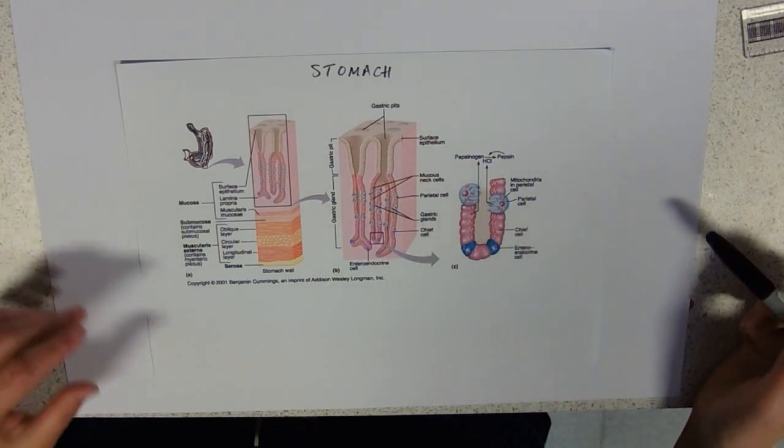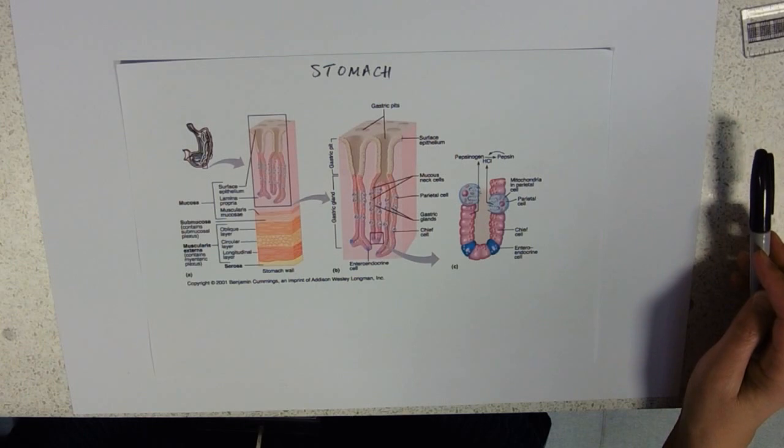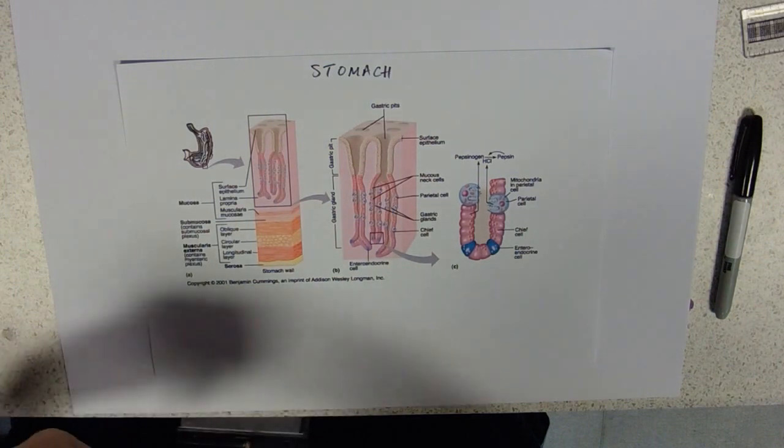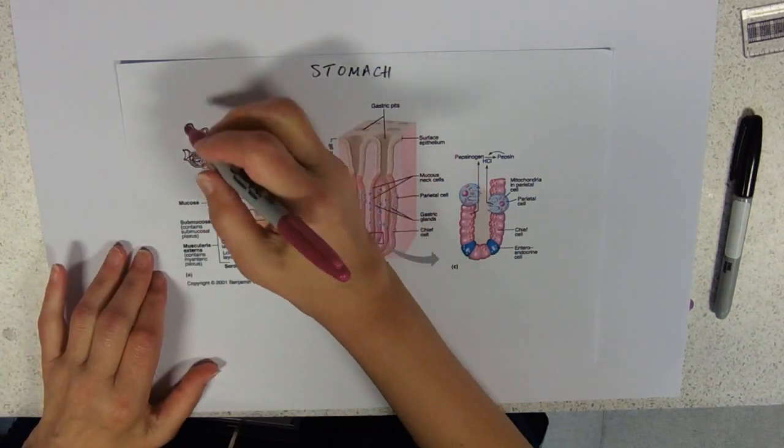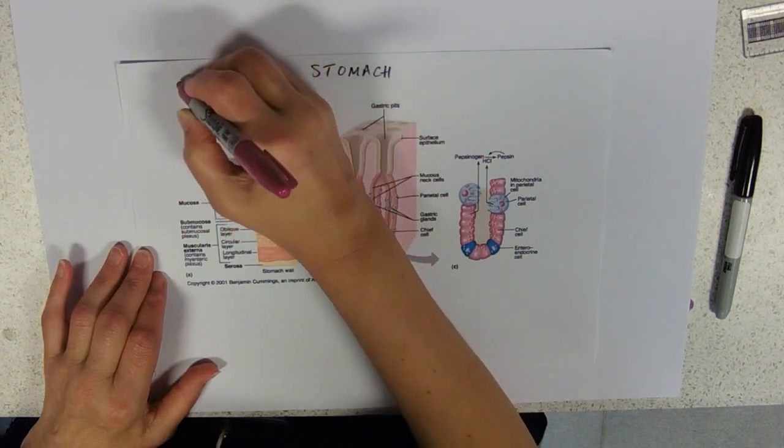The stomach is the first place that ball of food hits, and it passes down through the cardiac sphincter, which is a ring of muscle at the top.